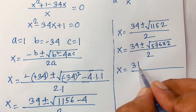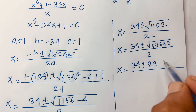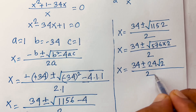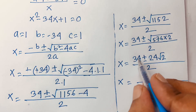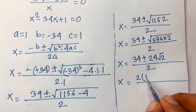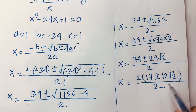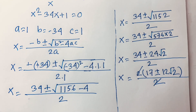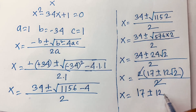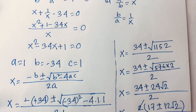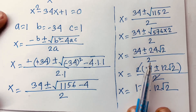I can rewrite 1152 as 576 times 2, and the square root of 576 is 24. So x equals 34 plus or minus 24 square root 2, over 2. Since 2 is common, this simplifies to x equals 17 plus or minus 12 square root 2.